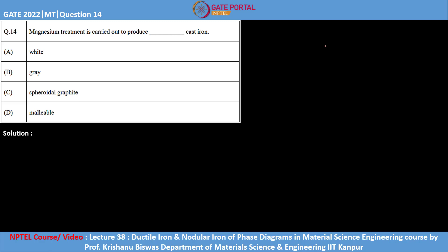This is question number 14 of GATE 2022 Metallurgical Engineering. Magnesium treatment is carried out to produce cast iron. Which of the following cast iron is produced with the help of magnesium treatment?